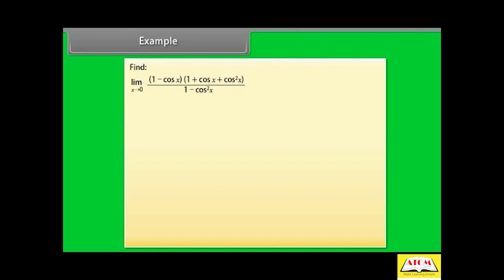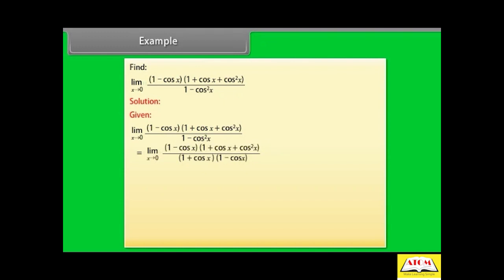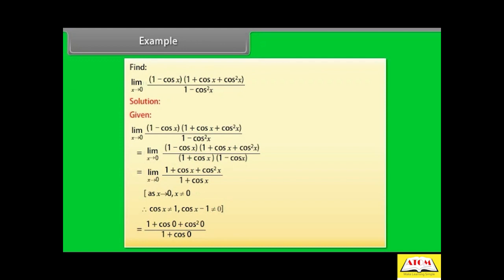Find limit x→0 of [(1 - cos x)(1 + cos x + cos²x)] / (1 - cos²x). Solution: rewrite as [(1 - cos x)(1 + cos x + cos²x)] / [(1 + cos x)(1 - cos x)]. Since x ≠ 0, cos x ≠ 1, so (1 - cos x) cancels. We get (1 + cos 0 + cos²0) / (1 + cos 0) = (1 + 1 + 1) / (1 + 1) = 3/2.